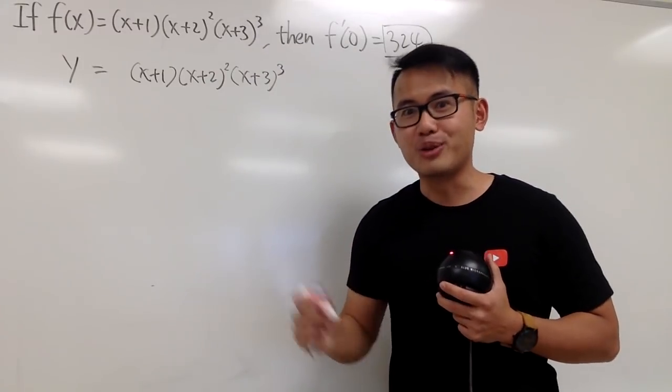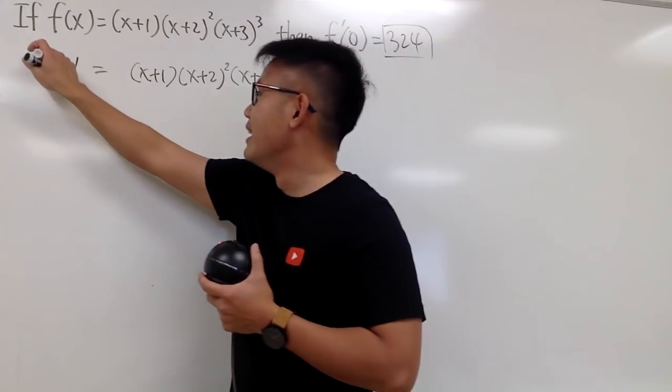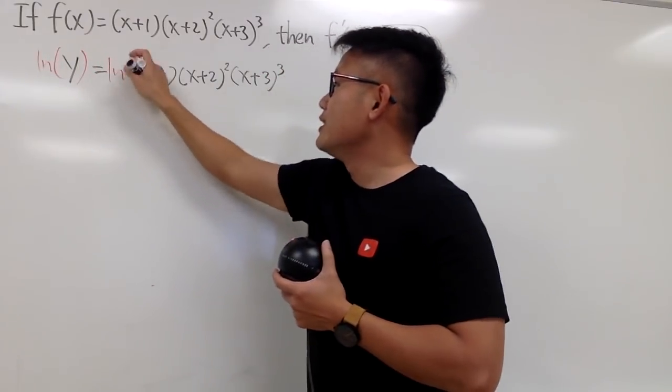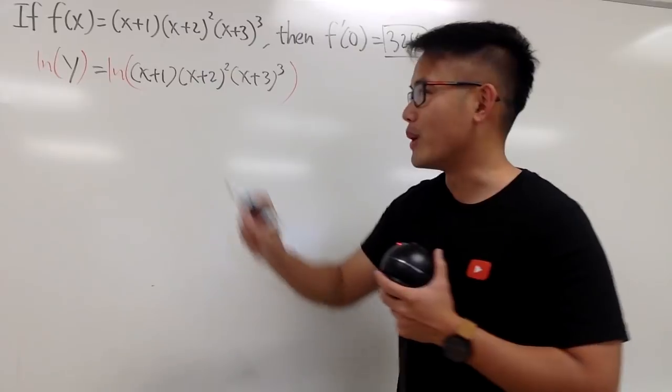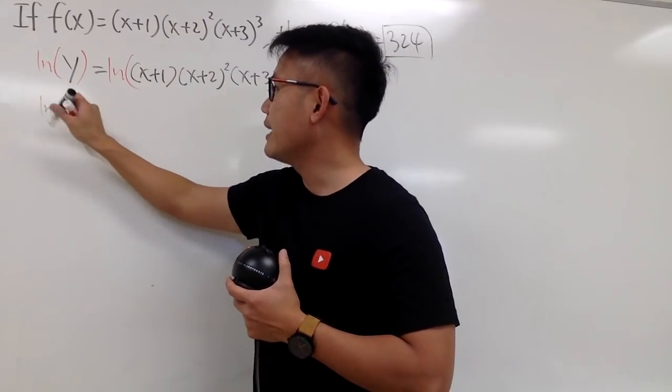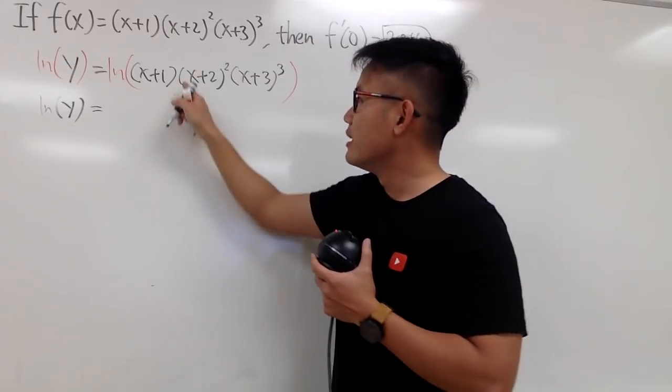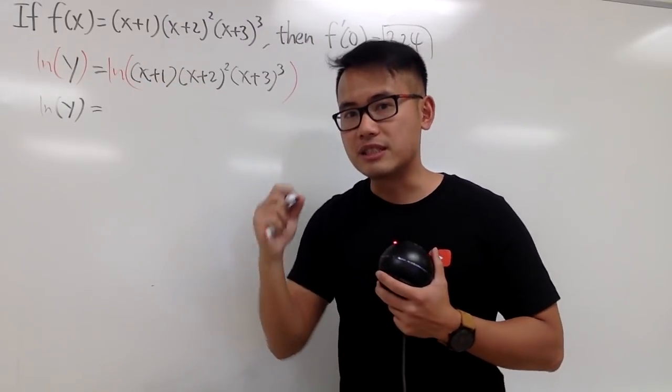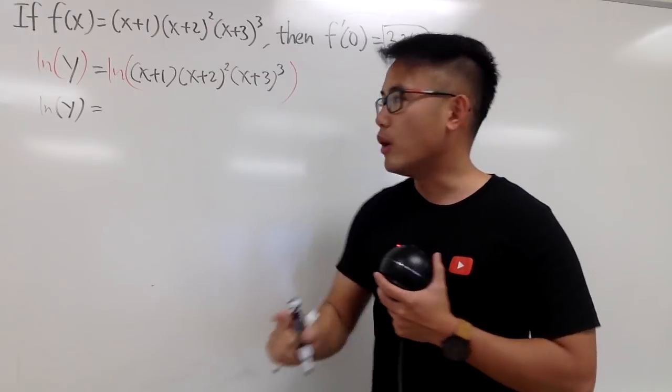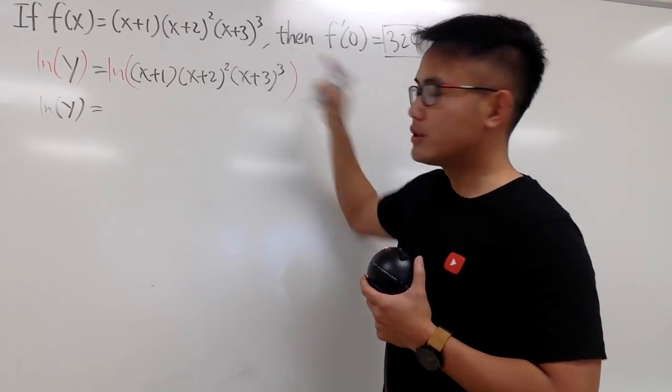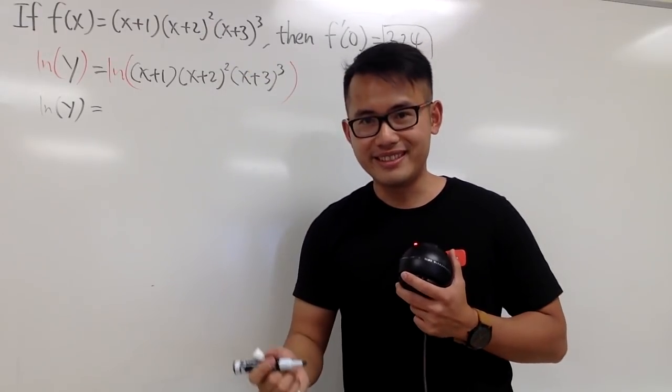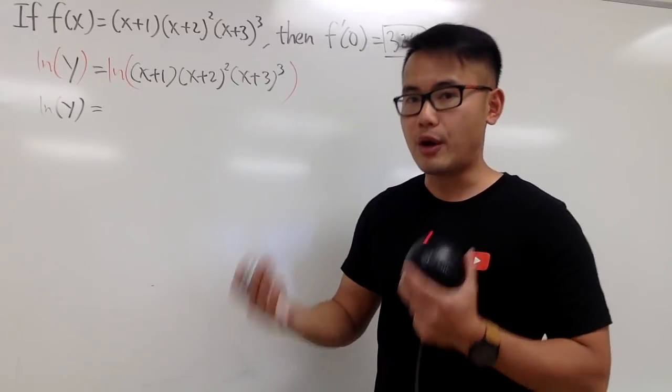We are going to take the natural log on both sides. This is logarithmic differentiation. When I take the natural log on both sides, I can write this down as ln, and we know that the product inside of the ln becomes the sum of the ln's. And also, the powers right here become coefficients. And let's do a few steps in our head.